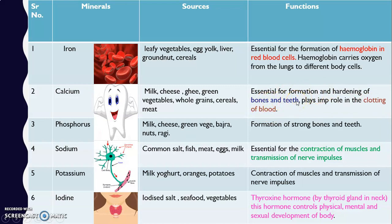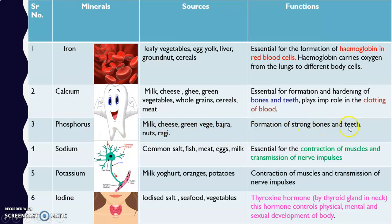Phosphorus is also important for the teeth and bones. It is found in milk, cheese, green vegetables, bajra, nuts like cashews and almonds, and ragi. Phosphorus minerals are important for the formation of strong bones and teeth.